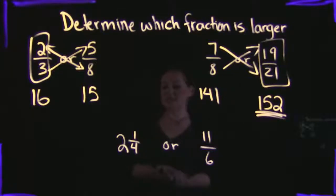Otherwise, our last example, we have 2 and 1 fourths or 11 sixths to compare. If you're given a mixed number along with a regular fraction, I would recommend changing them both into improper fractions.